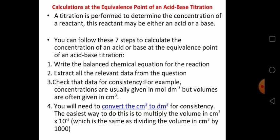You can follow these seven steps to calculate the concentration of an acid or base at the equivalence point. First, write the balanced chemical equation for the reaction — ask yourself which acid and which base are reacting. Second, extract all relevant data from the question: What is the concentration of the acid? What is the volume of the base (the pipette size)? What is the volume of the acid used? What are the number of moles of acid and base according to the balanced chemical equation?